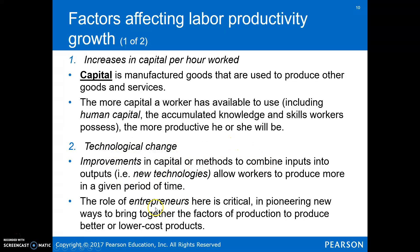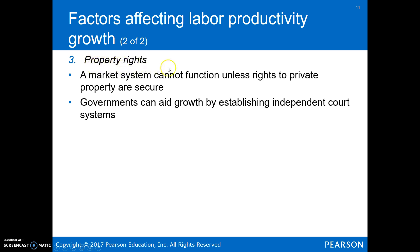Alongside technological change, entrepreneurs play a role. Entrepreneurs and inventors aren't necessarily the same — inventors come up with technological changes, but entrepreneurs find a way to bring them to market. A classic example is Steve Jobs: he didn't invent the smartphone, but he brought it to market in a way consumers wanted. Secure property rights also matter — people won't produce if someone can take what they've made. Government has a role in establishing courts that enforce contracts and property rights. We'll cover this more in Chapter 16.